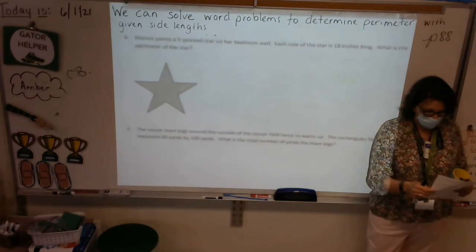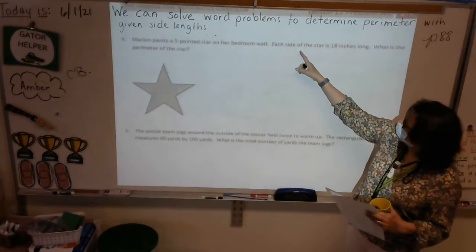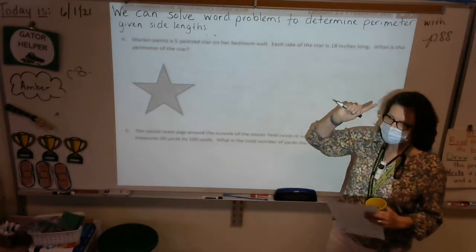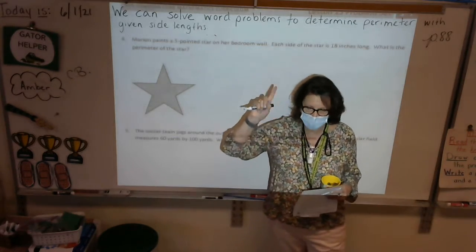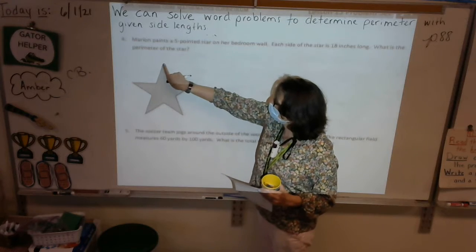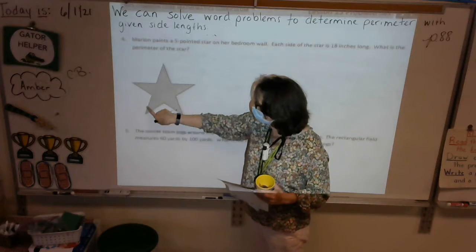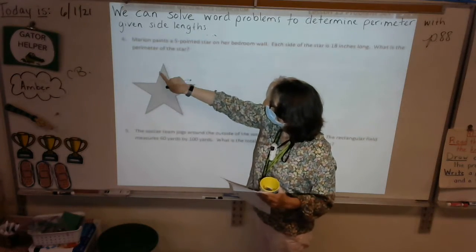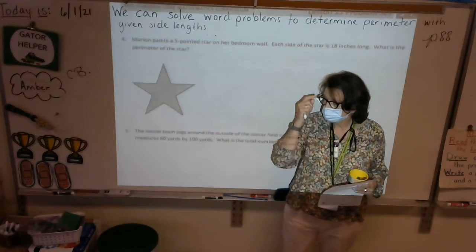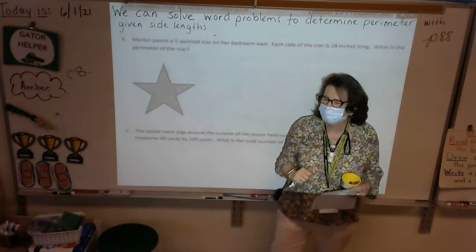All right. Number four, it says, Marion paints a five-pointed star on her bedroom wall. Each side of the star is 18 inches long. What is the perimeter of the star? Let's do this because this is a tricky shape. Let's take our figure and let's trace the perimeter of the star. So I'm going to start right here at the top and I'm going to trace the perimeter of the star. Boy, that's a long ways around, isn't it? That's 10. He said 10 sides, so you must have counted while you traced. No, no, because if there's five points and each point has two sides, five times two. Very good. Five times two is nice.